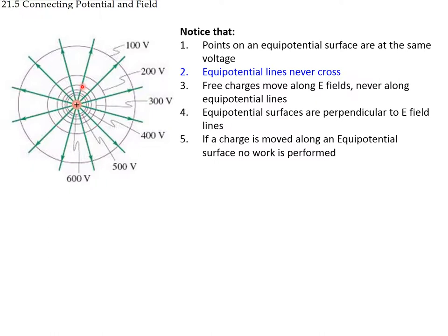If you place a positive charge near this point charge, it will be repelled and will move outward following the electric field, but never along an equipotential line or surface. It always moves perpendicular to those surfaces — equipotential surfaces are always perpendicular to the electric field.